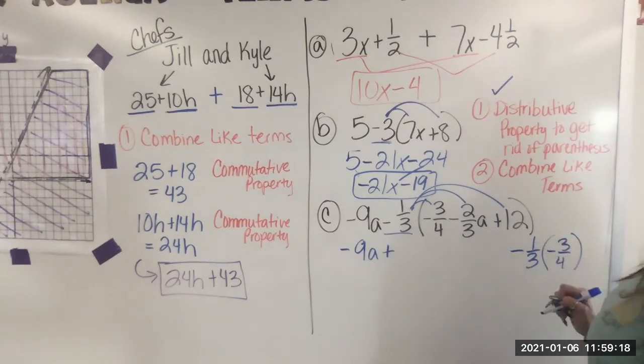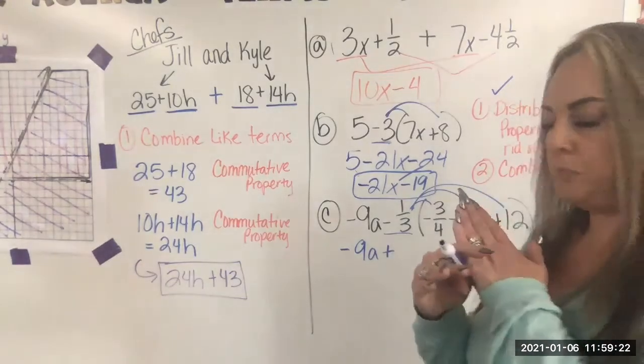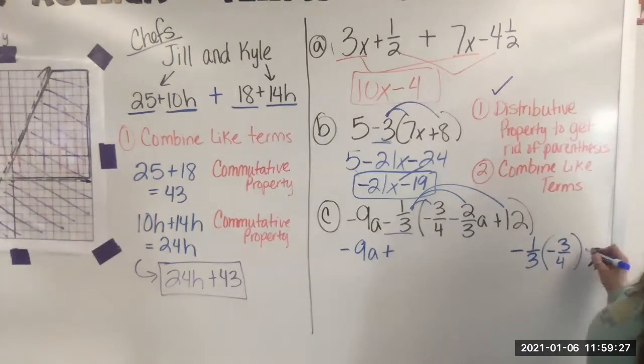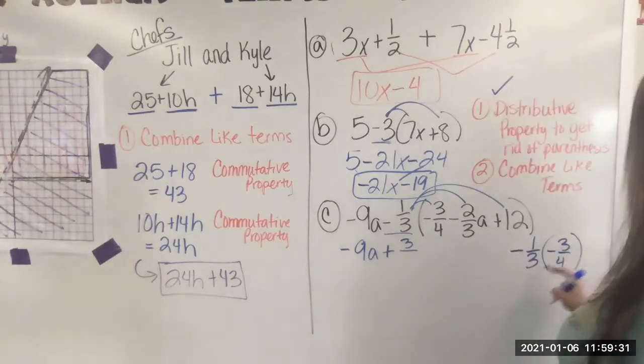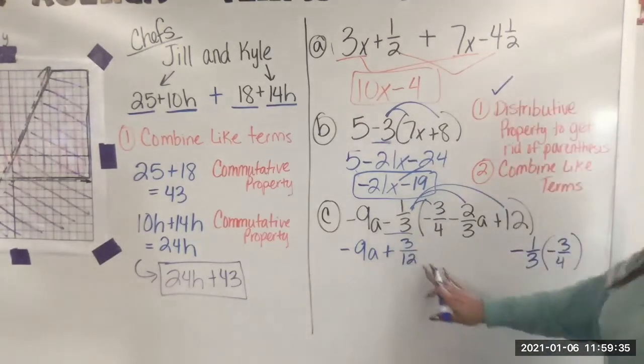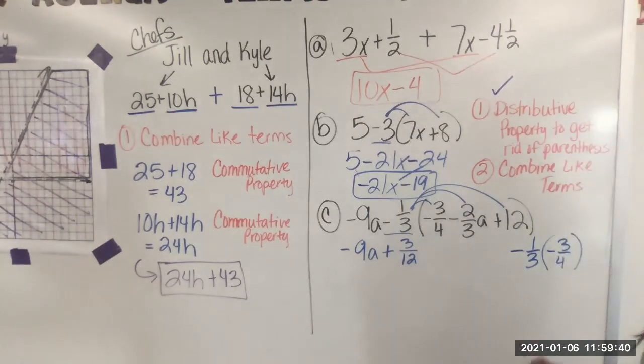Then I just multiply straight across. I can cross divide. I can look diagonally like we've learned before, but there's nothing I can simplify. So I get three, one times three, and then three times four, I get three twelfths. And I'm just going to leave it like that for now. I can simplify that later because that's actually one fourth, but I'm not going to worry about that right now.